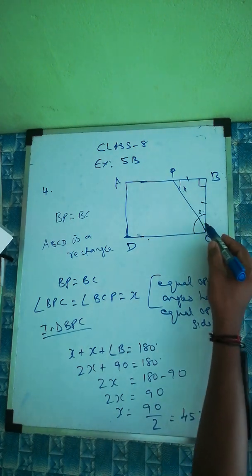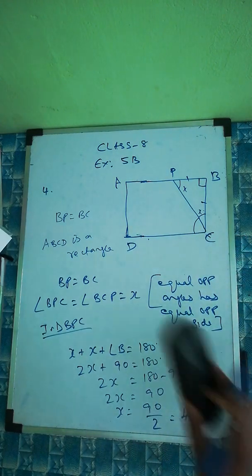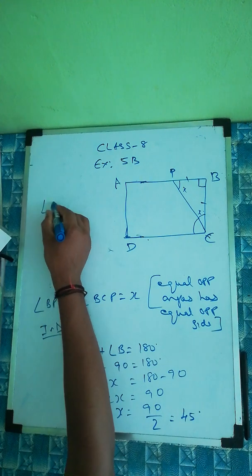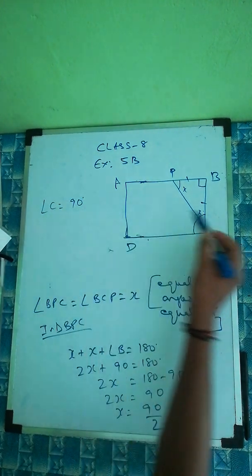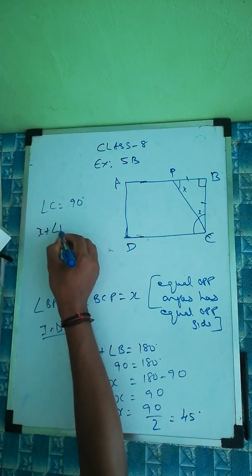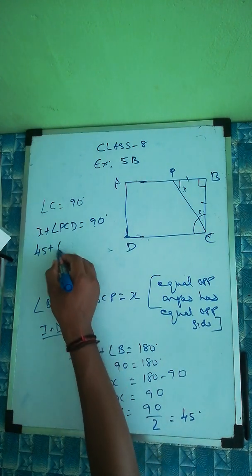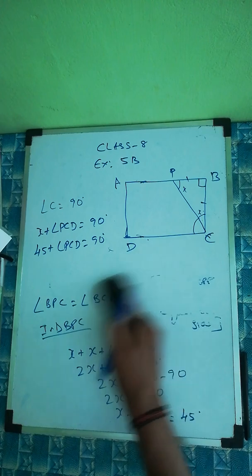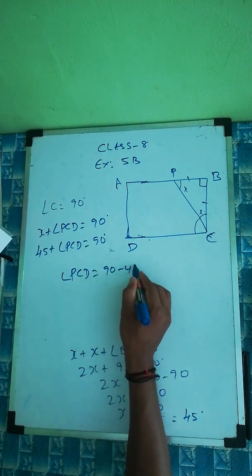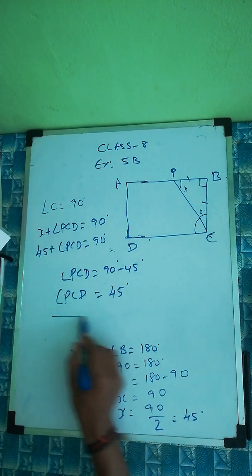Both angles are 45 degrees. Angle C in the rectangle is also 90 degrees. So we can write X plus angle BCD equals 90. Since X is 45, angle BCD equals 90 minus 45, which gives us 45 degrees. Therefore angle BCD is 45 degrees.